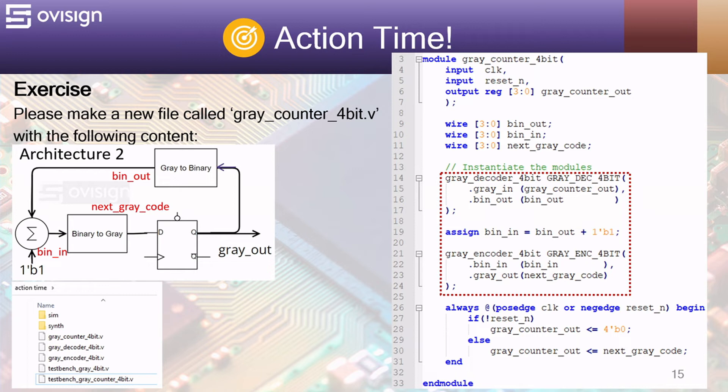At reset the value is zero. After the reset gets deasserted, the register value is converted to a binary code, then incremented with one, and next is converted back to a gray code and stored in the register.